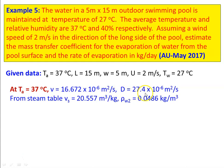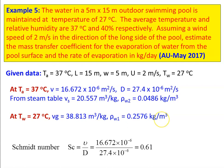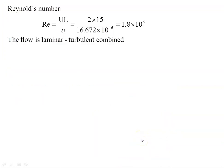Diffusion coefficient from data book: D = 27.4 × 10⁻⁶ m²/s. From steam tables at 37°C, specific volume of steam = 20.557 m³/kg, so ρ_w1 = 1/20.557 = 0.0486 kg/m³. At water temperature 27°C, specific volume = 38.813 m³/kg, ρ = 1/38.813 = 0.02576 kg/m³. Schmidt number Sc = ν/D = 16.67 × 10⁻⁶ / (27.4 × 10⁻⁶) = 0.61. Reynolds number Re = uL/ν = 2 × 15 / (16.67 × 10⁻⁶) = 1.8 × 10⁶ — flow is combined laminar-turbulent.